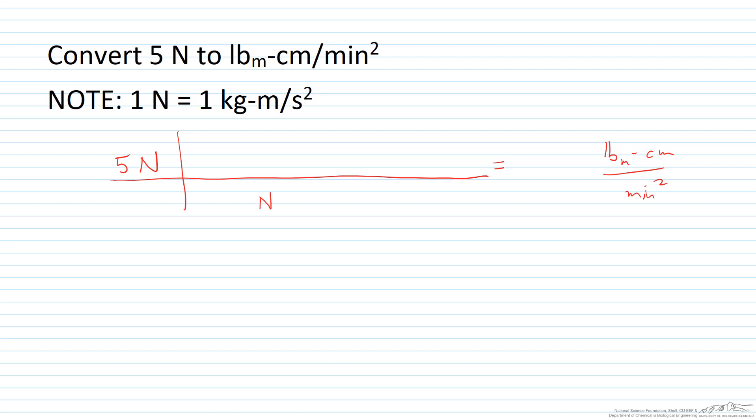So we want to cancel out Newtons and somehow get pound mass. Pound mass obviously is mass, kilogram is mass. So we want to first convert Newtons to kilogram meter second squared. Alright, so this right here is equal to 1. That's a conversion factor.